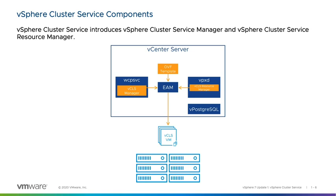ESX Agent Manager deploys the vSphere Cluster Service VMs to the ESXi hosts in the vSphere cluster and receives VM placement information from the vSphere Cluster Service Resource Manager. The vSphere Cluster Service Resource Manager is a new module running in the VMware VPXD service; it manages vCLS VM initial placement and failover placement. The vSphere Cluster Service OVF is a new VM OVF template used to deploy the vCLS VMs, stored at /storage/lifecycle/vmr-hdcs on the vCenter Server. vCenter Server patches and updates may replace the OVF template with an updated version if needed.